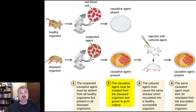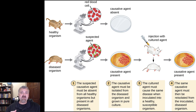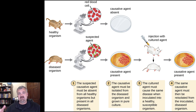Then number two: you take the suspected agent and you isolate it and grow it in pure culture. The causative agent must be isolated from the diseased organism and grown in pure culture. If you take just a sample from a diseased animal and put it in a healthy animal and it gets sick or dies, all you know is that one of the organisms you transmitted — or some compound — was what caused it. So isolating a pure culture is very important.